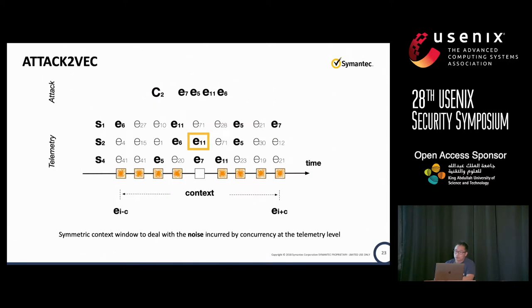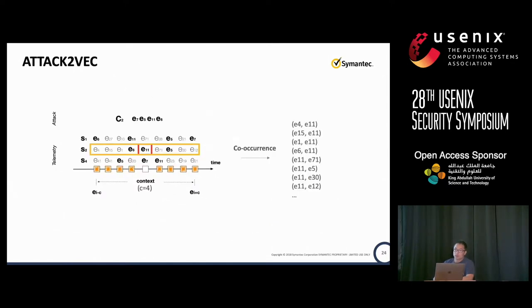One thing we have to deal with is that because of concurrency and the system recording security events, the order may not be preserved. So we propose a symmetric context window surrounding the event being investigated to deal with the noise incurred by concurrency. That is the context window centered around E11 — you will be able to capture the security events that may occur at the same time as this security event.